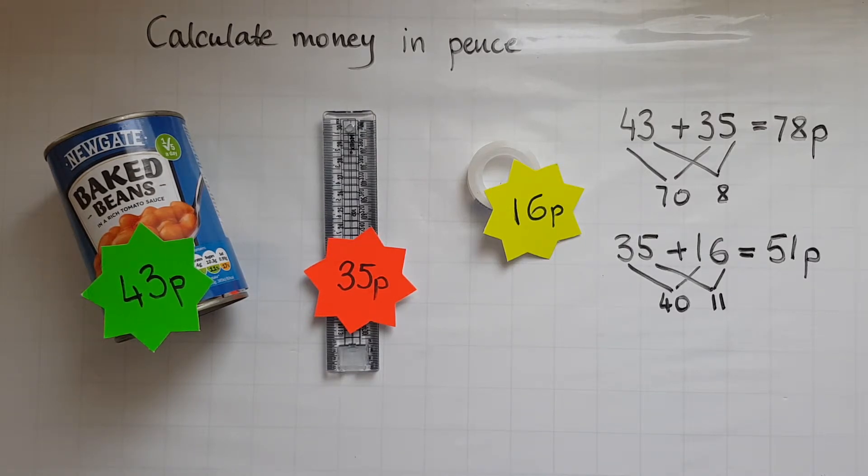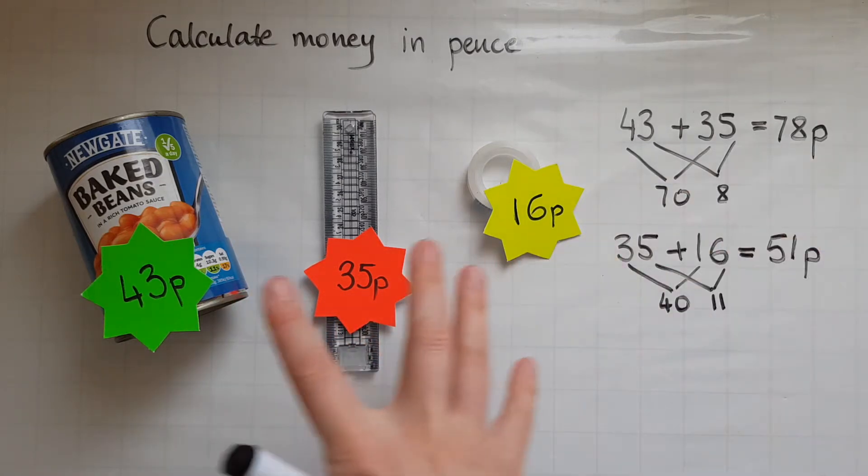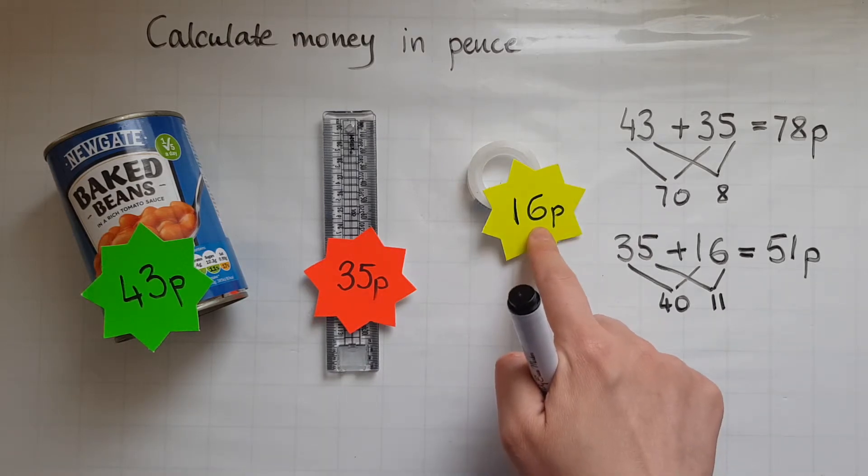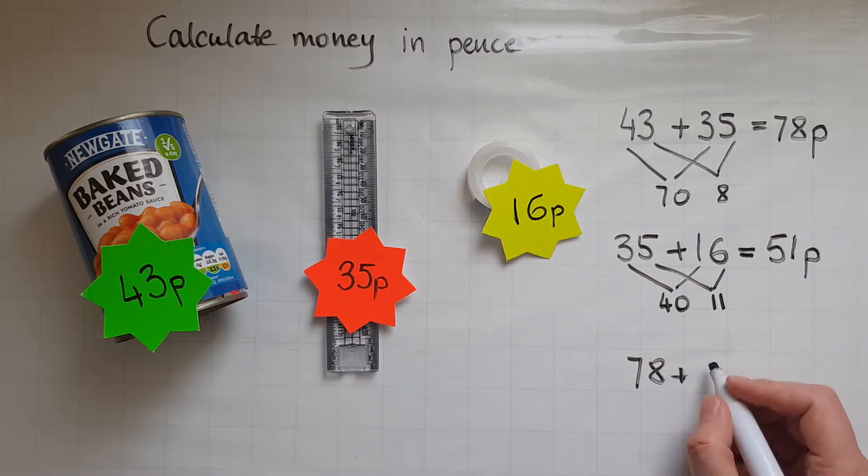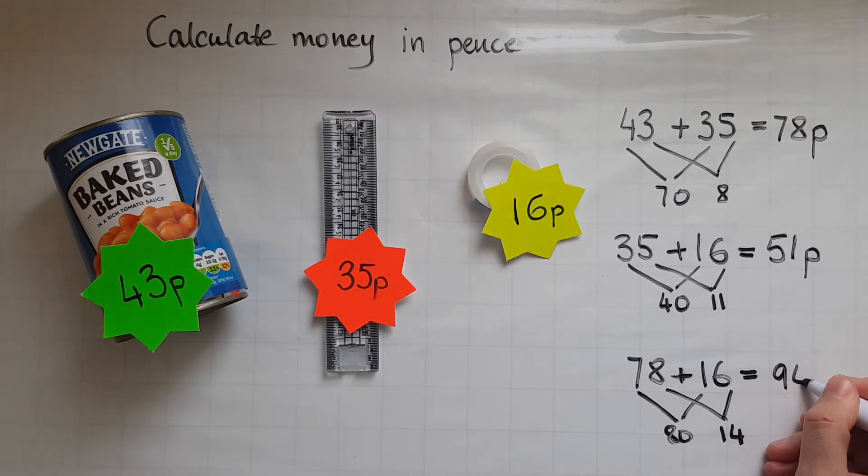And finally I'll add these all together. So I'll find the cost of all three items together. So we've got 43 pence and 35 pence. Now we worked these out together here. So we've got these two costing 78 pence. And what is left is the 16. So if I add 16 to that, 70 and 10 is 80. 8 and 6 is 14. So 80 and then 90 and the 4 is 94. So that is 94 pence altogether.